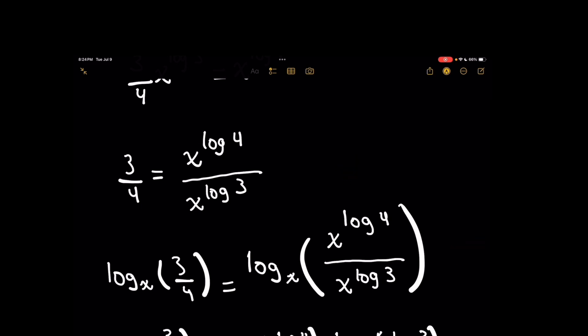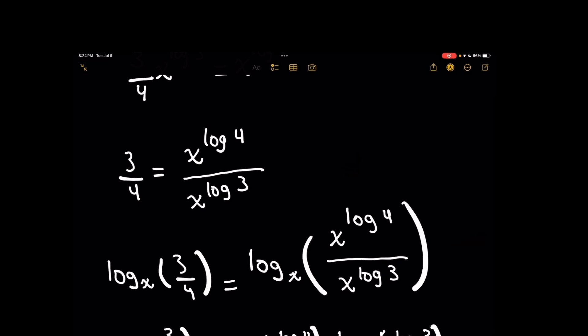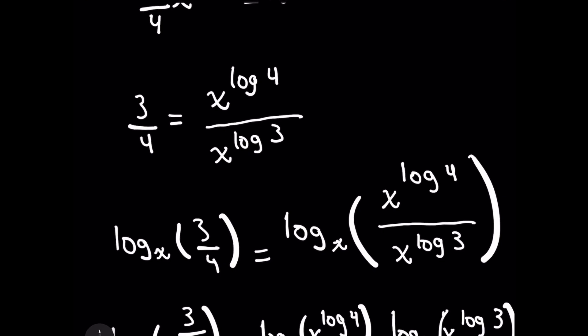I'm going to actually choose x as my base and take log base x of both sides, giving me log base x of 3 fourths on the left and then log base x of this expression, x raised to the log 4 over x raised to the log 3 on the right.